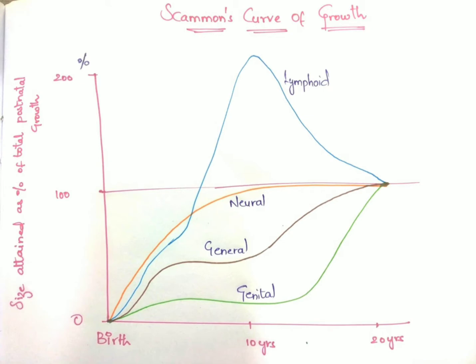The lymphoid tissue proliferates rapidly in late childhood and reaches up to 200 percent of the adult size. As you can see, the blue curve shows that lymphoid tissue grows very rapidly and attains 200 percent of adult size at the age of 10 years. This is an adaptation to protect children from infection, as children are more prone to infection.